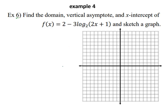Example four — I call it example six in the notes because some slides had more than one example. Find the domain, the vertical asymptote, and the x-intercept of this function, and sketch a graph. I want us to go through the process of doing a complex one by hand, because analyzing one completely free from technology makes us walk away much stronger.